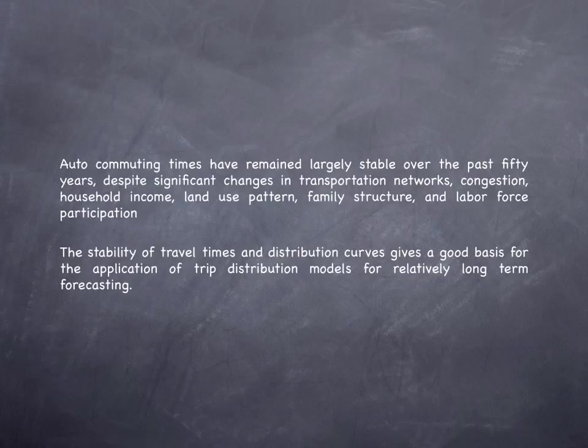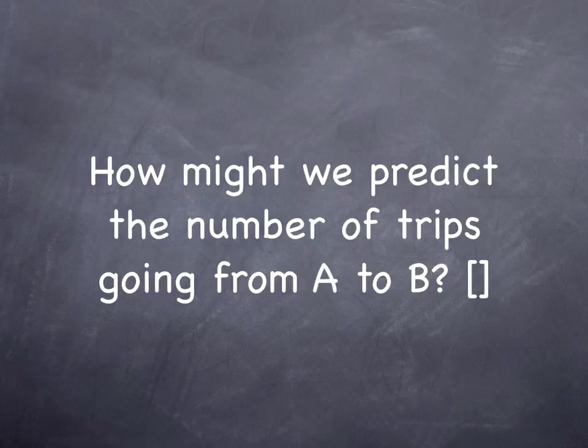Note also that auto commuting times have remained largely stable over the past 50 years, despite significant changes in transportation networks, congestion, income, land use patterns, family structure, and labor force participation rates. The stability of travel time and distribution curves gives a good basis for the application of trip distribution models for relatively long-term forecasting.